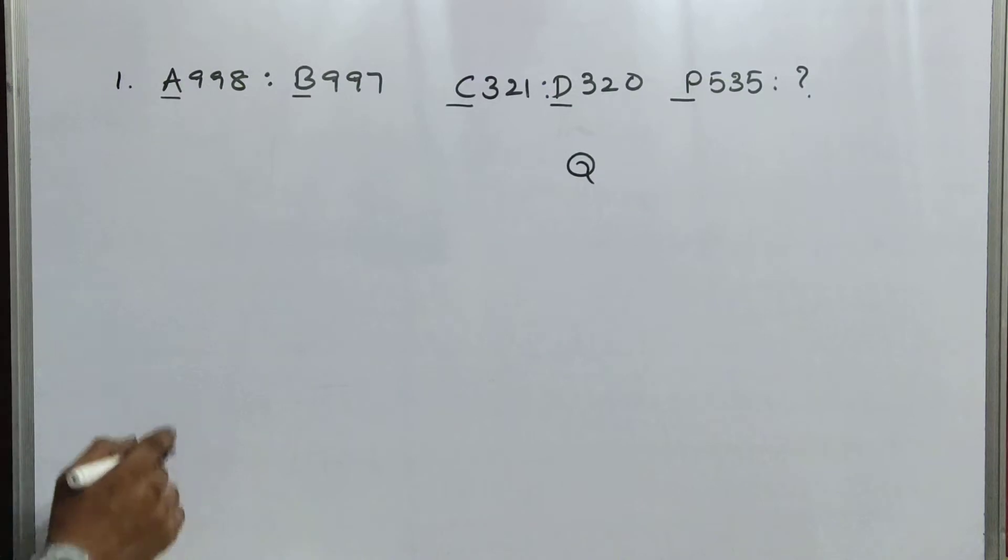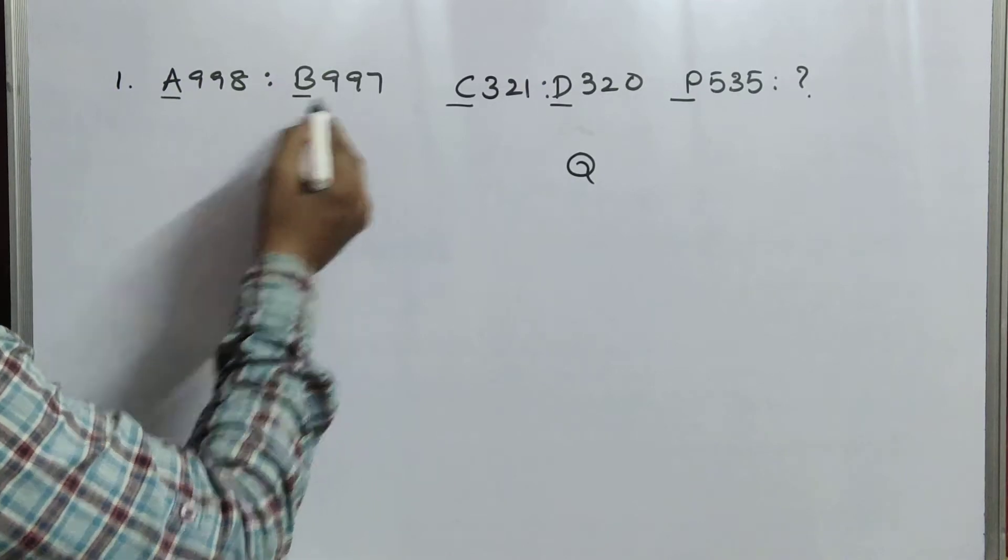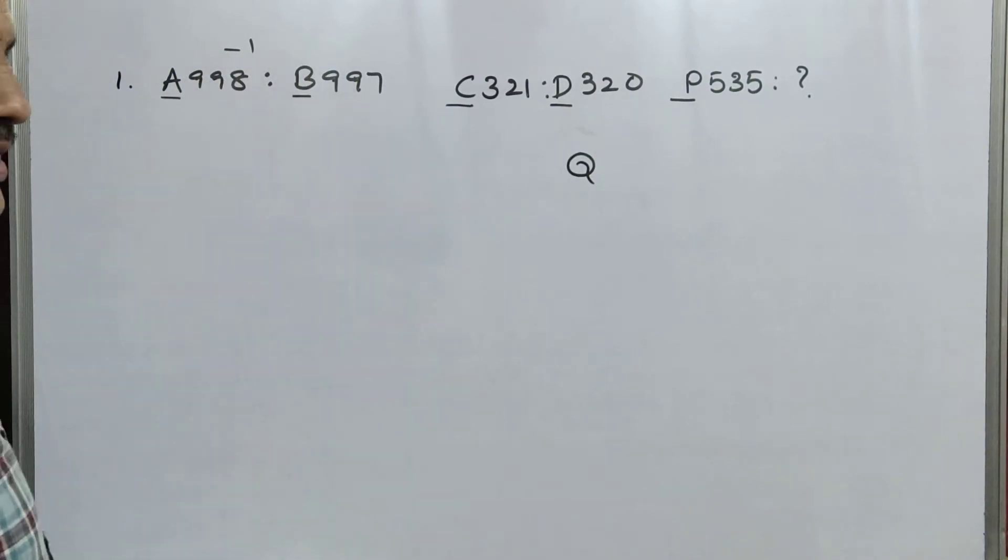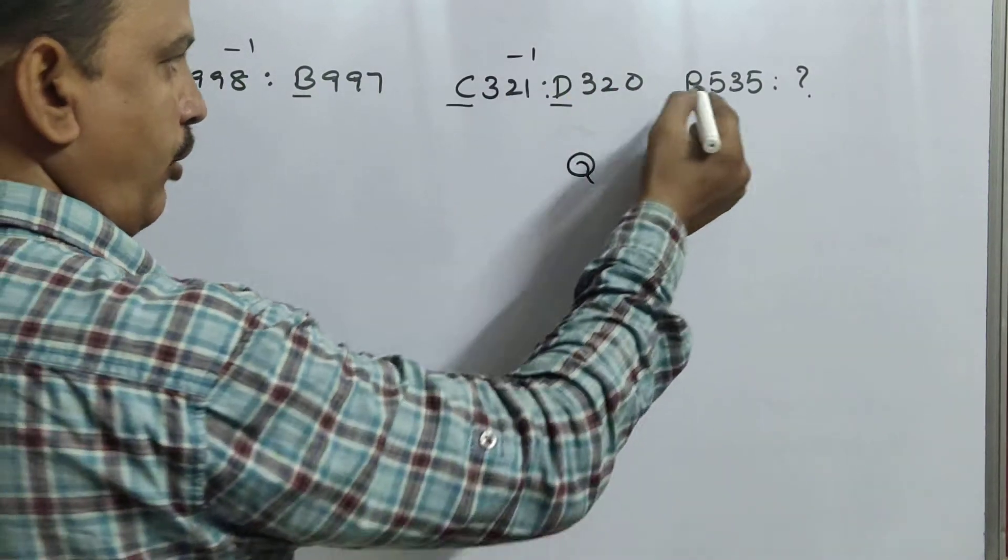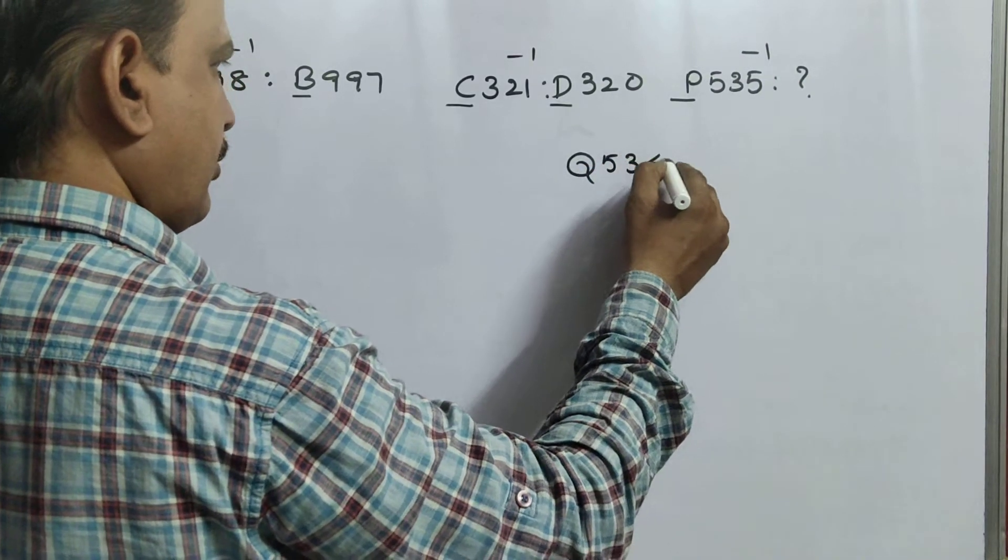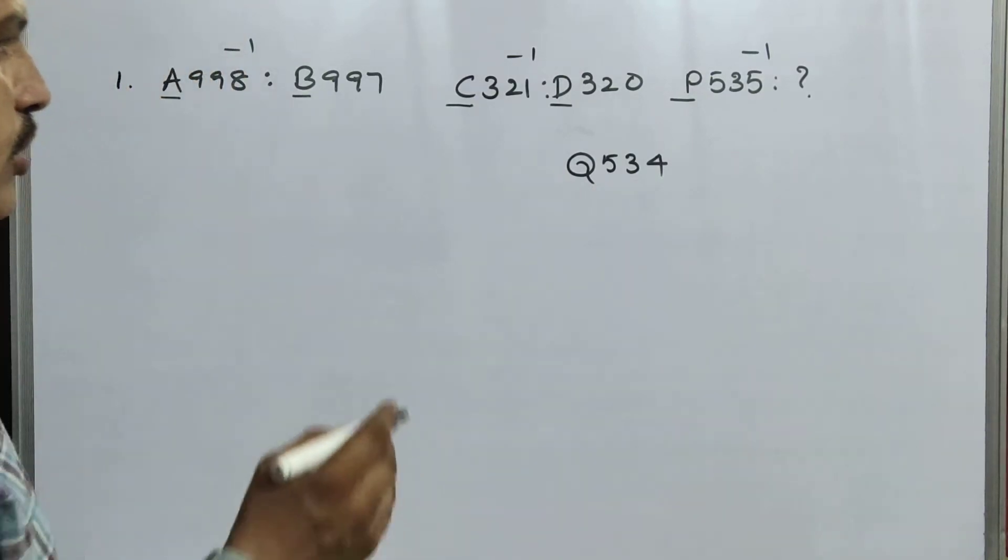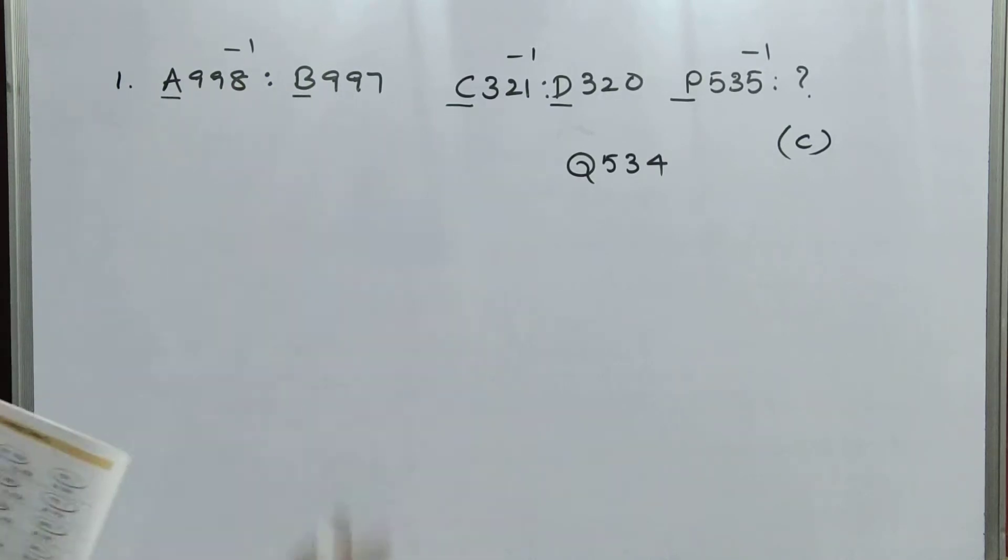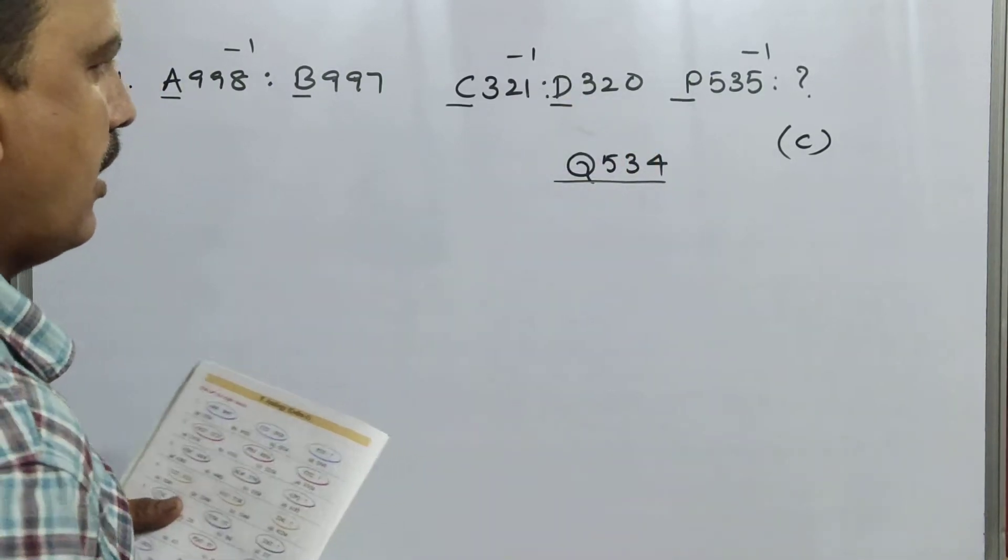You can write answer according to the question. Next, 998 means 998. Here, 997. That means, minus 1. So, 998 minus 1 is 997. Now, see this one also. 321 minus 1 is 320. Now, 535 minus 1 is 534. So, is there any option is there? Yes, the option C. So, the answer is C option. Q534 is the right answer.